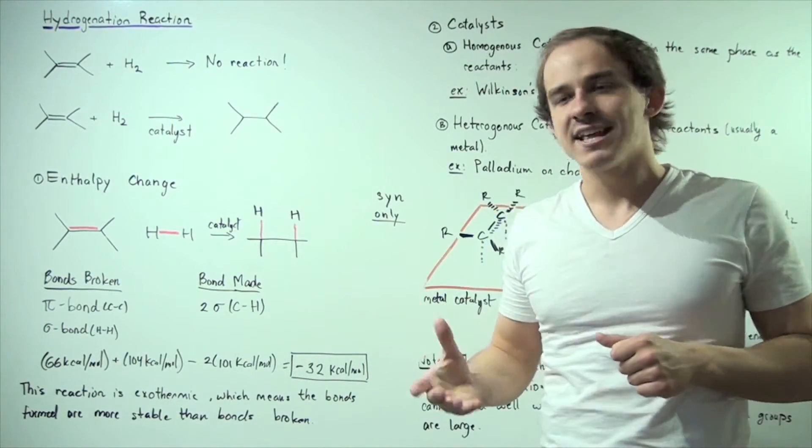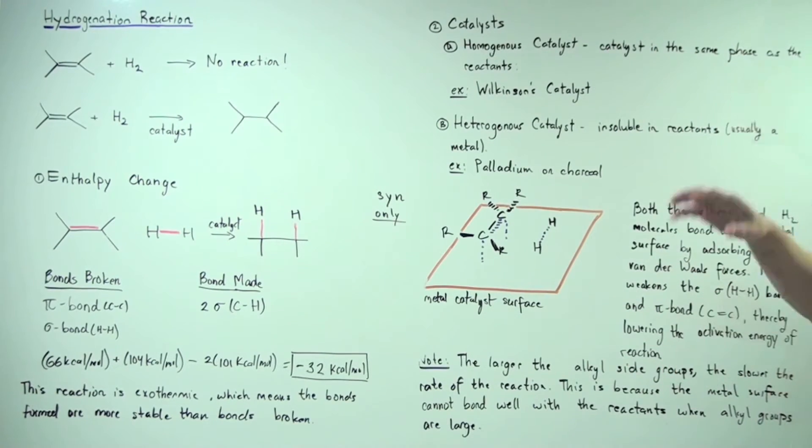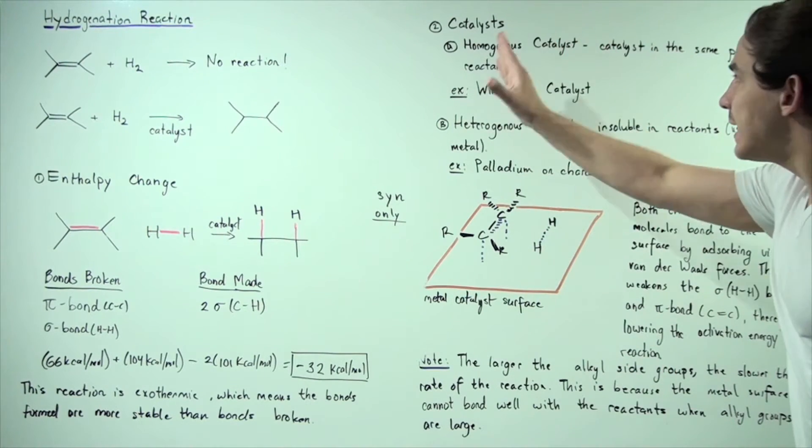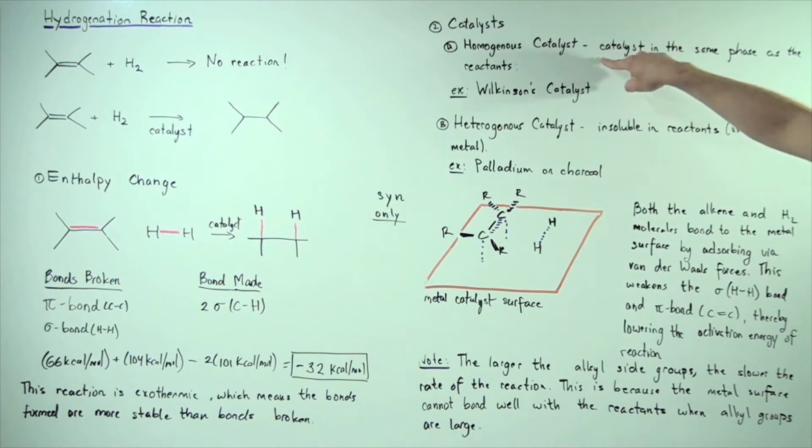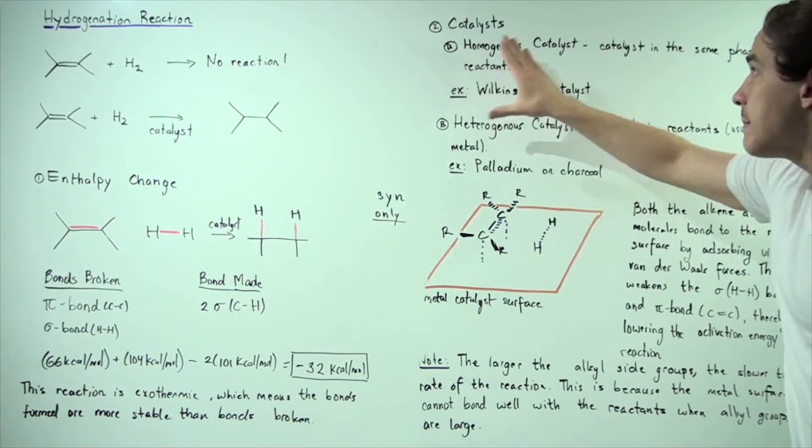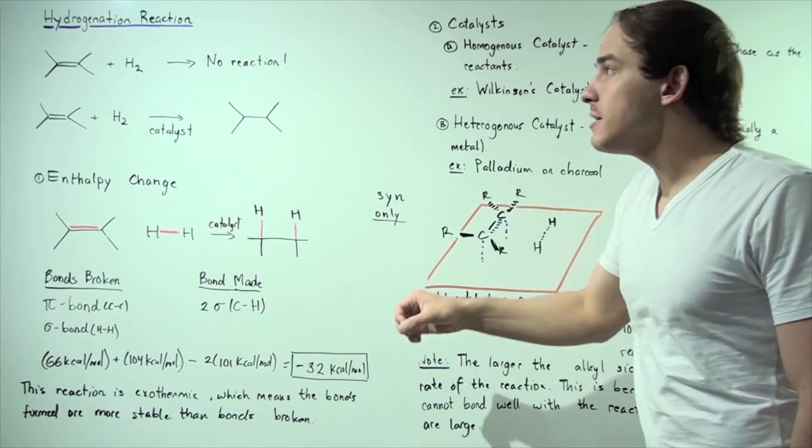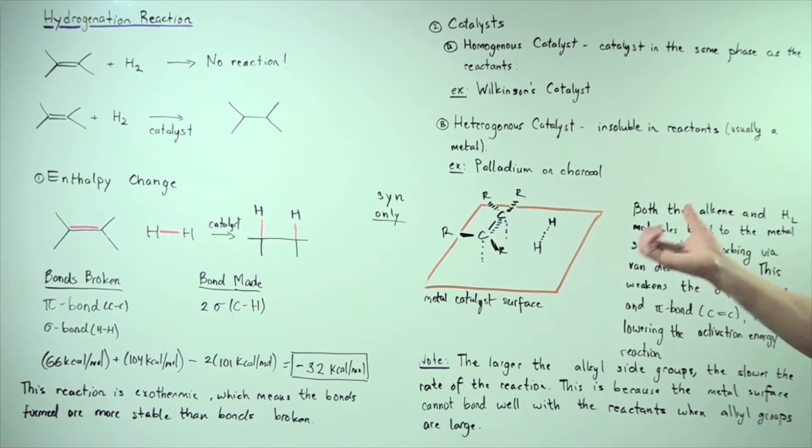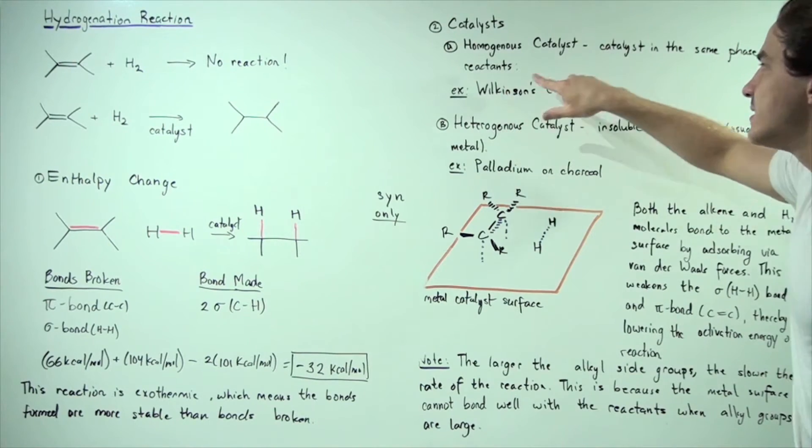So let's examine what types of catalysts. So let's examine what types of catalyst exists in these reactions. So we can have either a homogenous catalyst, which is a catalyst in the same phase as the reactants. In other words, this type of catalyst is soluble in our reactants. And one example is the Wilkinson's catalyst.